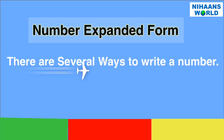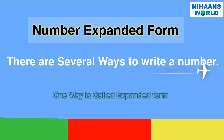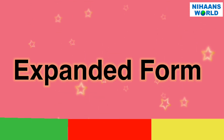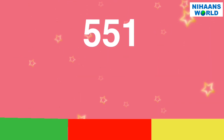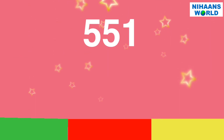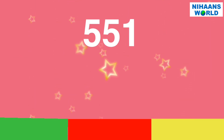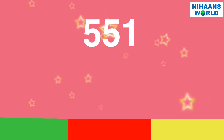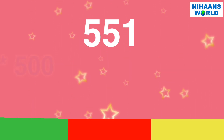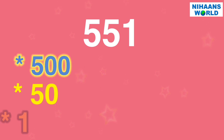There are several ways to write a number. One way is called expanded form. When you write a number in expanded form, you write the value of each digit based on its place value position. You write the number this way to help us show how much each digit is worth in the whole number.